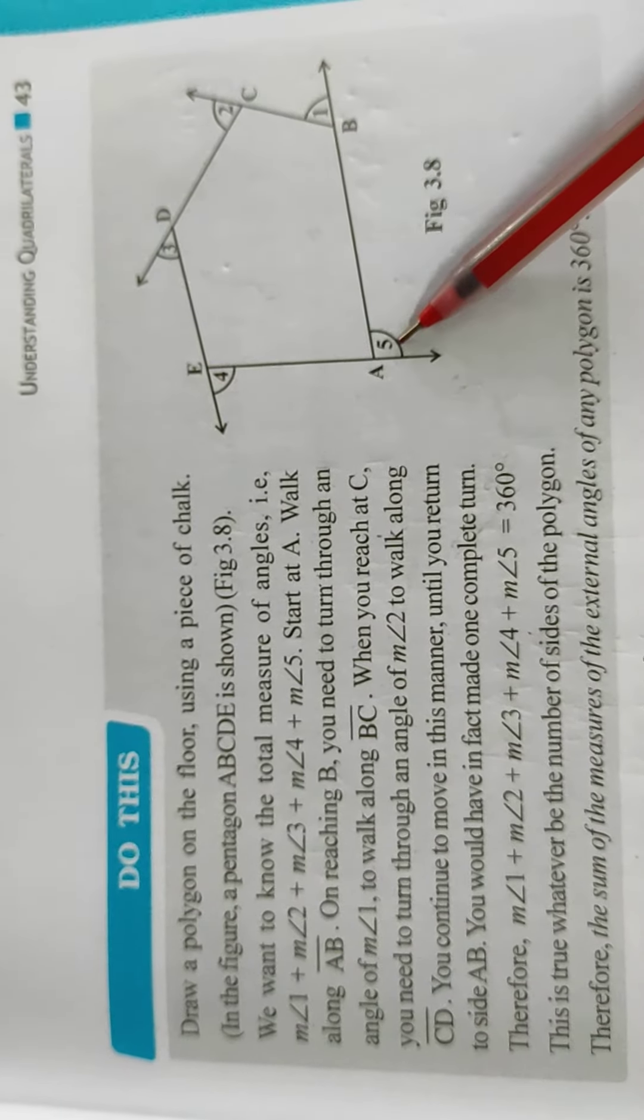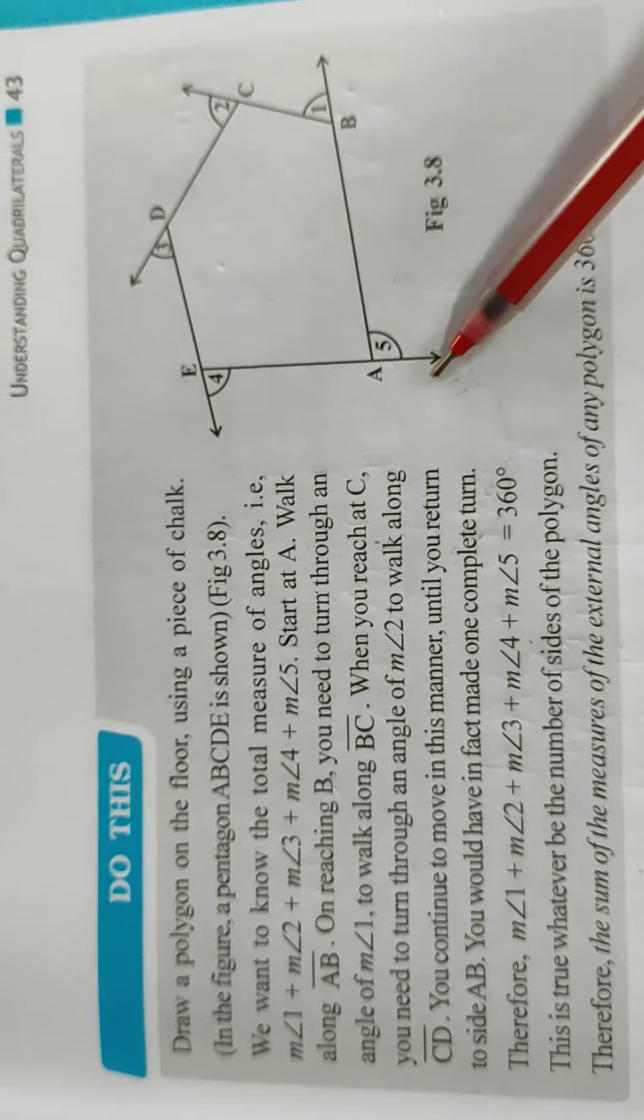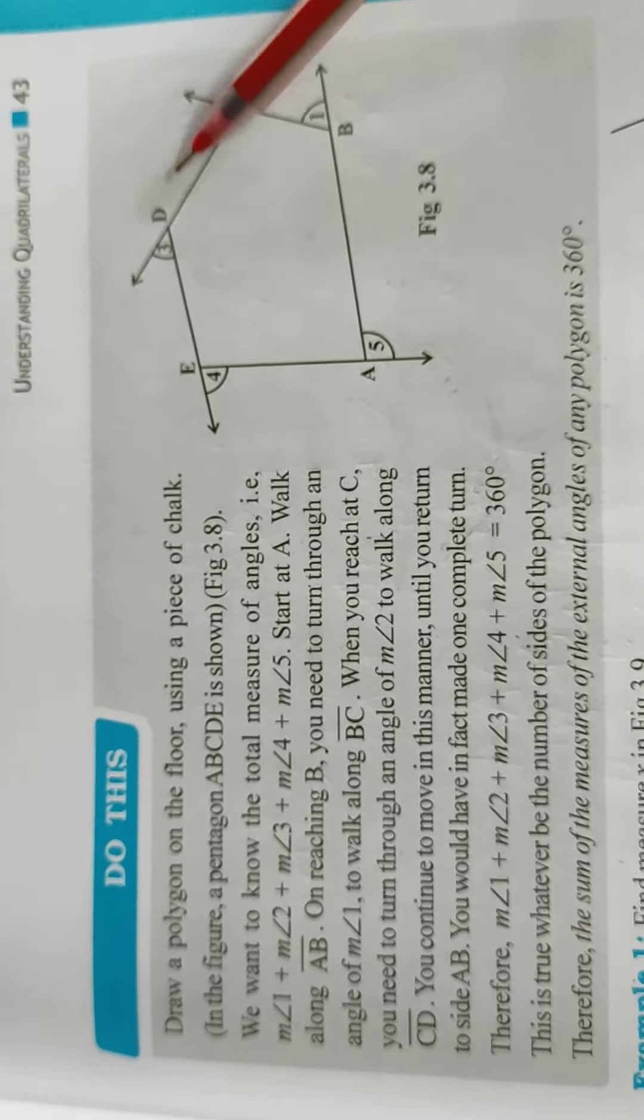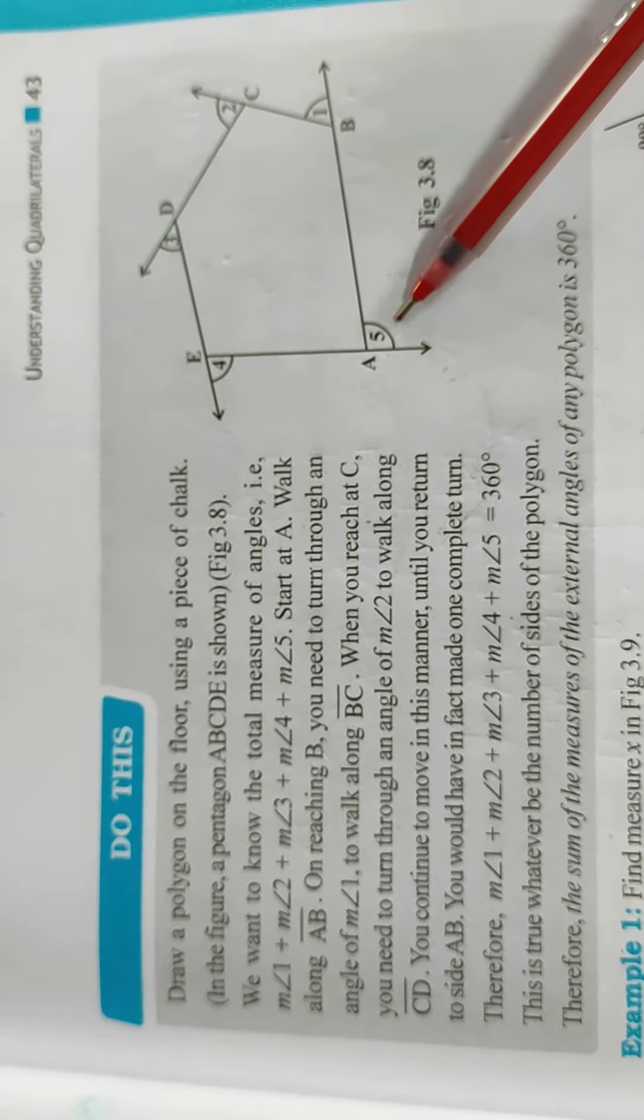You can see here 1, 2, 3, 4, 5. So addition of angle 1 plus angle 2 plus angle 3 plus angle 4 plus angle 5 will be 360 degree.